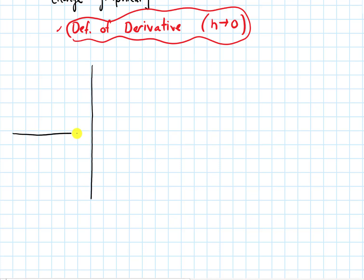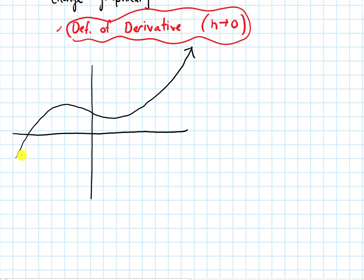Let me draw some axes and a graph. Let's say this is the graph of some function y equals f of x. On the graph I'm going to draw some x value, and that point would be x comma f of x. My goal is going to be to find the slope of the tangent line — to get an exact formula for the slope of the tangent line.